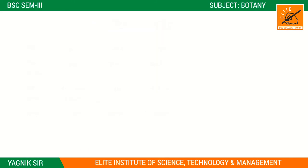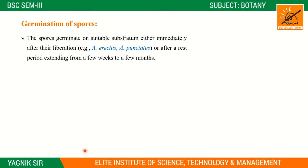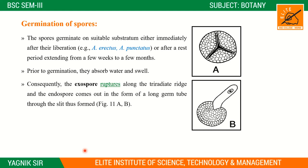Now the germination of the spore: germination occurs either immediately after liberation or after a rest period. Under suitable substratum conditions the spore germinates. Prior to germination the spore absorbs water and swells. The exospore ruptures along the triradiate ridges and the endospore comes out to form a germ tube.